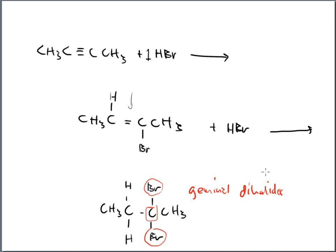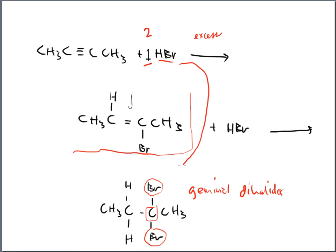Sometimes a question will say: here's an alkyne, react it with HBr, and put a '1' in front — that means stop after one step, breaking the triple bond to a double bond: H goes on one, Br on the other. Other times they'll write a '2' out front or write the word 'excess' on the arrow — a clear sign they want you to go all the way to the end.